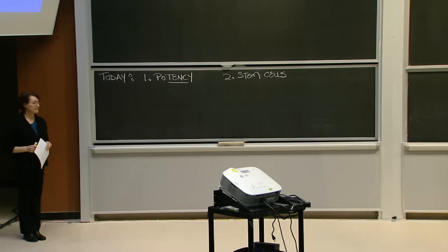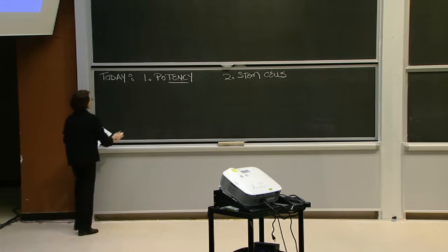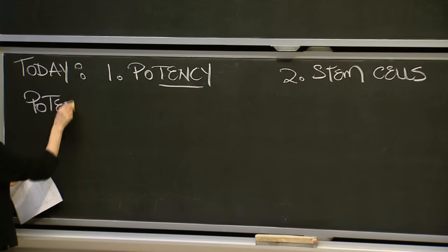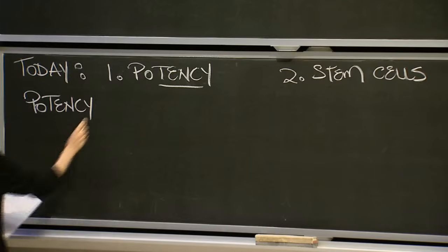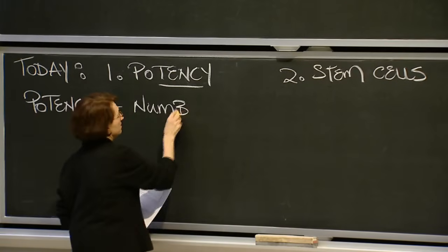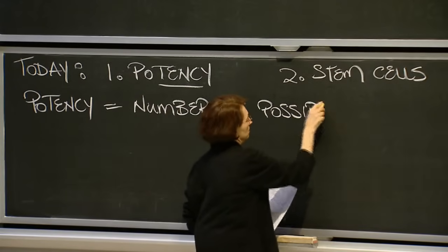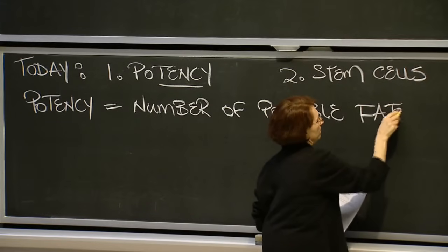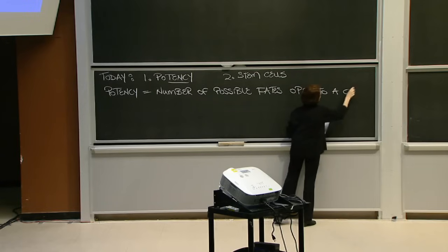Potency, along with fate, determination, and differentiation, is one of those terms that you need to know and understand in order to understand stem cells. Potency refers to the number of possible fates that a cell can acquire — the number of possible fates open to a cell.